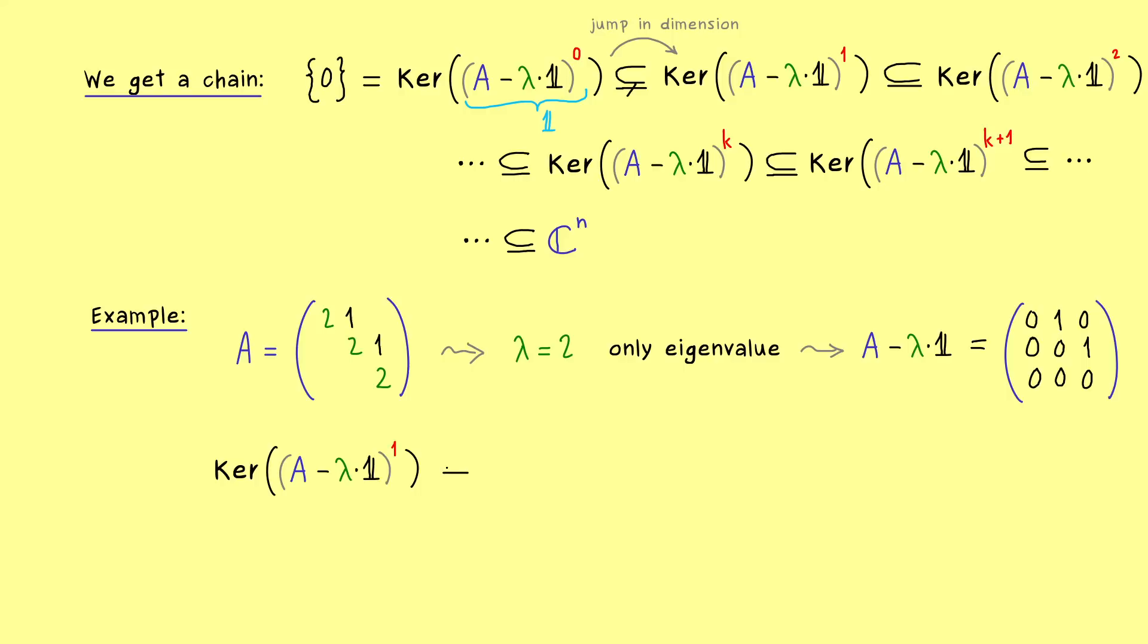Hence calculating the powers of this matrix is not hard at all. And moreover, also calculating the kernels is quite simple. In fact for our first power we already have the row echelon form, so we can read the whole kernel immediately. So you see we have two pivots here and only one free variable. Therefore this kernel is definitely just one-dimensional.